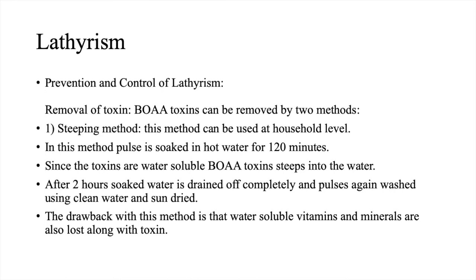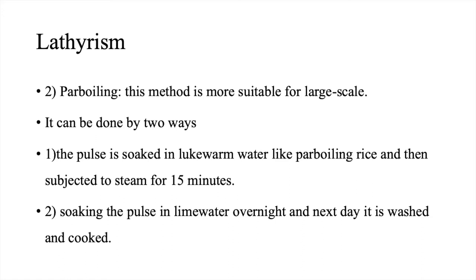Prevention and control of lathyrism: Removal of toxins can be done by two methods. The first is the steeping method — we soak the pulse in hot water for 120 minutes. Since the toxins are water-soluble, BOAA toxin steeps into the water. After two hours, soaked water is drained off completely and the pulse is again washed using clean water and then sun-dried. The drawback with this method is that water-soluble vitamins and minerals are also lost along with the toxins. The second method is parboiling, which is more suitable for large scale. It can be done in two ways: first, the pulse is soaked in lukewarm water like parboiling of rice and then subjected to steam for 15 minutes; second, soaking the pulse in lime water overnight and the next day it is washed and cooked.